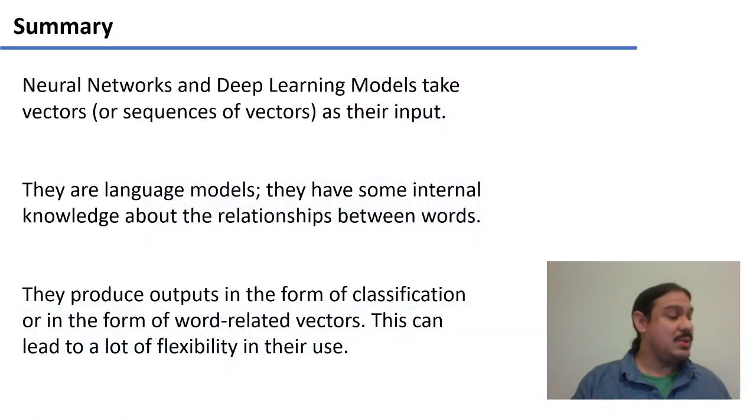As a summary of what we're talking about in this video, neural networks and in general, deep learning models, take vectors or sequences of vectors as their input. These have numbers in them, of course. Neural networks and deep learning models are language models, in that they have some knowledge about the relationships between words, and therefore some knowledge about human language.